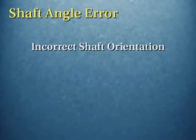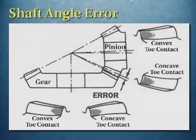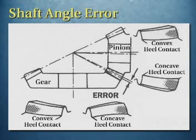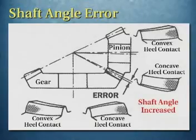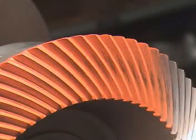The third condition is shaft angle error. This is caused by incorrect shaft orientation of the gear and pinion. Here on the gear and pinion we see toe contact on both the convex and concave sides. To correct this error, the shaft angle must be decreased. On the other hand, if heel contact is present on the convex and concave sides of both gear and pinion, the shaft angle must be increased.